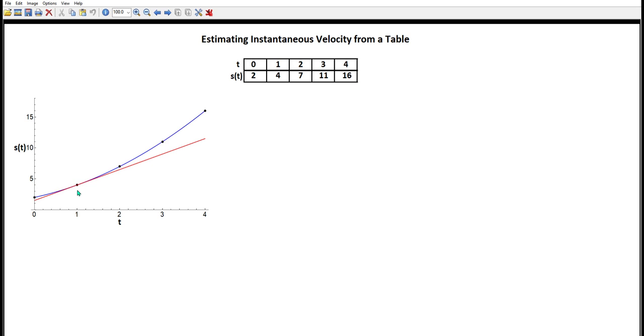Now, we know that we estimate slopes of tangent lines using secant lines. And we want to pick a point close to the point of tangency, which is right here. The problem is there aren't points that are all that close. The two closest are ones that happen at t equals 2 and one that happens at t equals 0. Which should we pick?